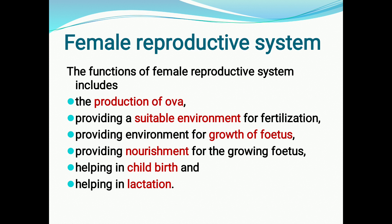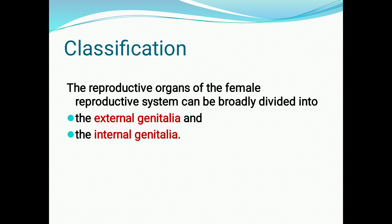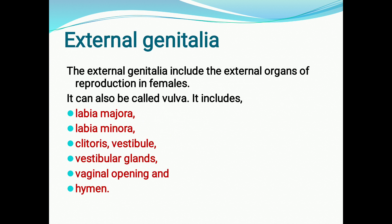The female reproductive system can be broadly divided into two parts: the first is external genitalia, which we are going to discuss in this lesson, and the next is internal genitalia.